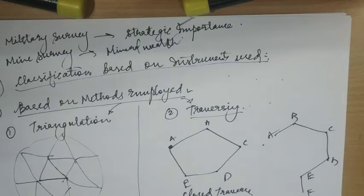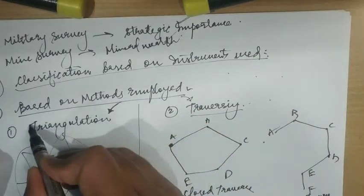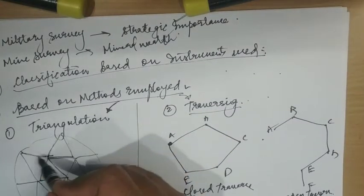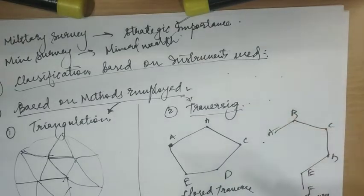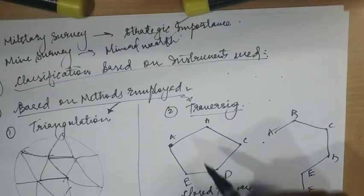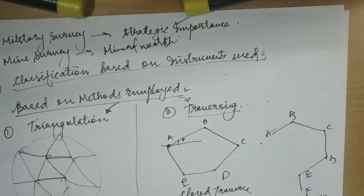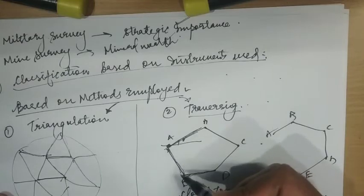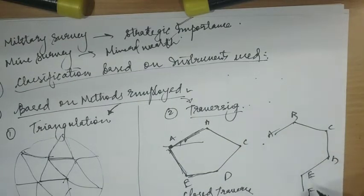The last category of classification is based on the methods employed. On this basis, surveying is of two types: first is triangulation, second is traversing. In triangulation, control points are established through a network of triangles — the whole area is divided into a network of triangles. In traversing, control points consist of a series of connected points established through linear and angular measurements. If the last line meets the first starting point, it is called a closed traverse; if they do not meet, it is called an open traverse.